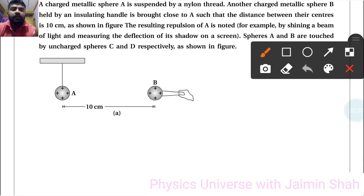So see, earlier force F is equal to K QA QB upon R square.